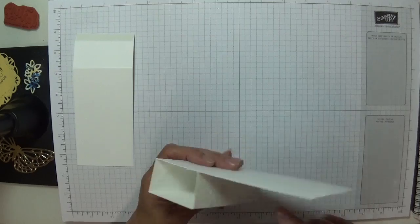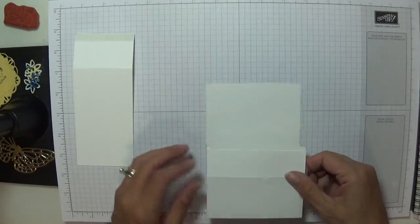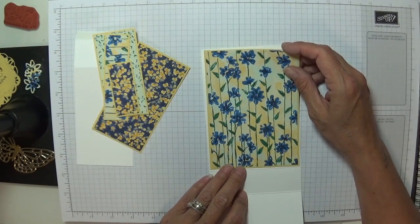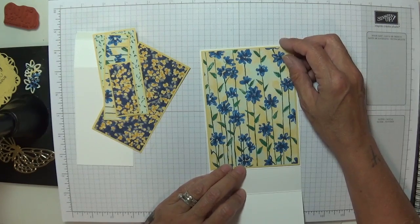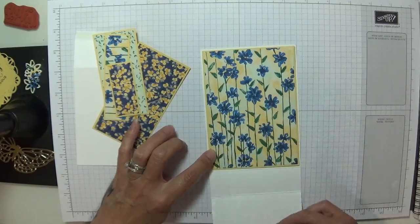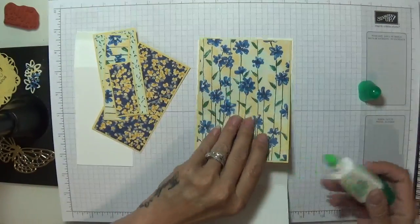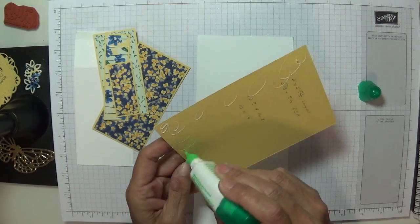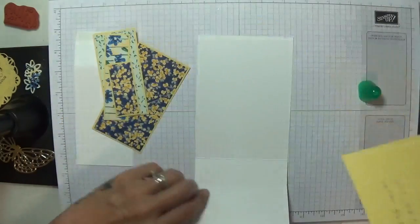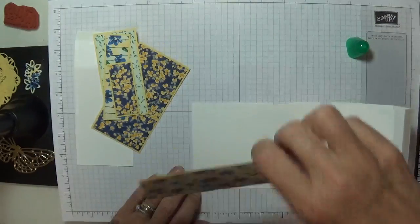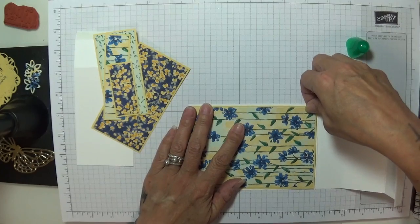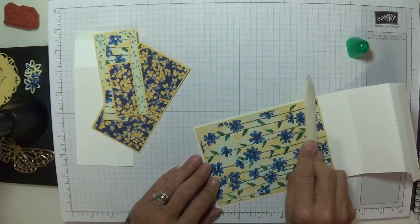Now, because this is going to come up and stand like that when it's nice and square, we need to add our designer series paper here, here and here first. So this is my long panel. This is going right here. So I'm going to get my Tombow.